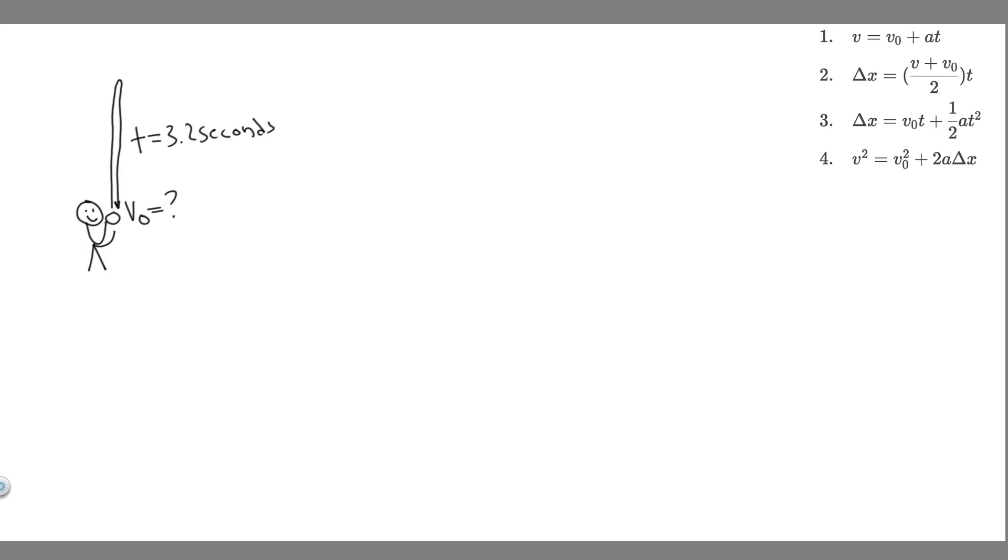The first thing I want to do is write down the given. What information are we given throughout this interval? We know the time this is going to take, and the way we're going to solve this is by splitting this into a different interval. I'm going to take the interval from the beginning all the way to the tip, because we know more about that than the whole interval.